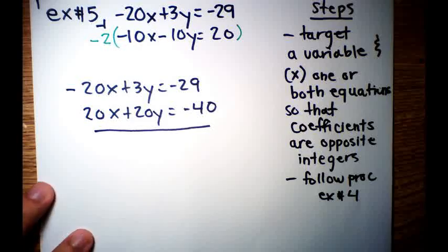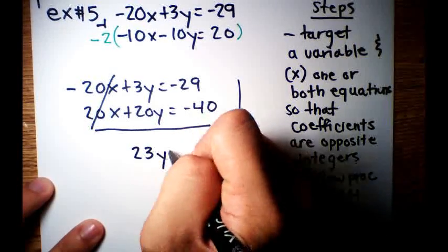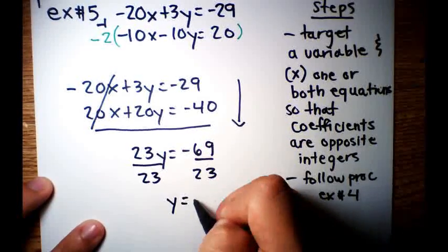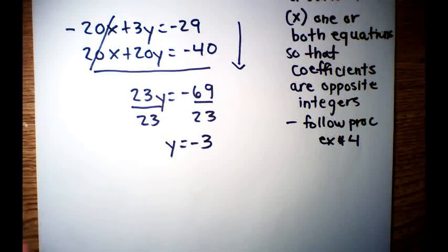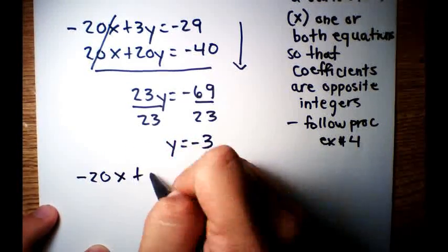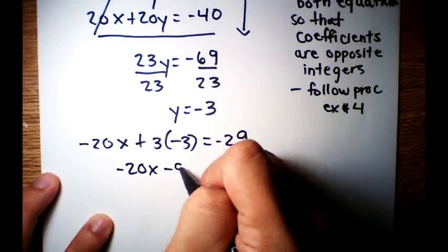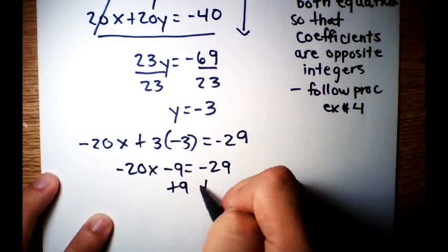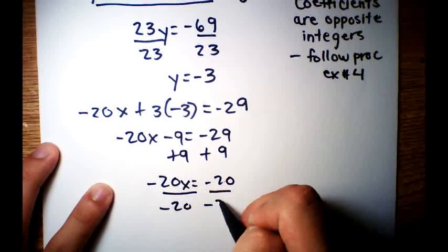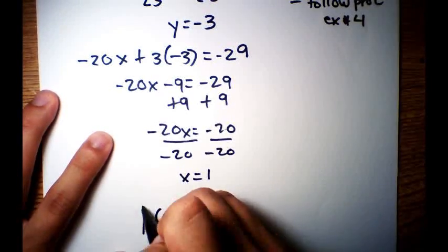From there, now we can add down because we can eliminate the x's right away. This is going to be negative 23y is equal to negative 69. Divide both sides by 23. y is equal to negative 3. From there, just plug it back into any of the two equations. I'm going to plug it back into negative 20x plus 3y is equal to negative 29. So negative 20x plus 3 times negative 3 is equal to negative 29. Negative 20x minus 9 is equal to negative 29. Add 9. Negative 20x is equal to negative 20. Divide both sides by negative 20. x is equal to 1. So your answer for example number 5 is 1, negative 3.